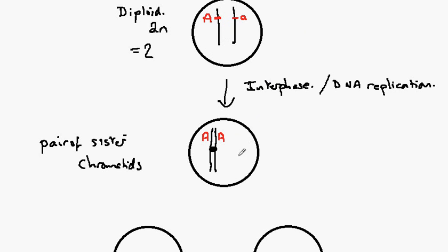This is equally the case for this chromosome here which will DNA replicate. So we have little a, little a, two copies, another pair of sister chromatids.